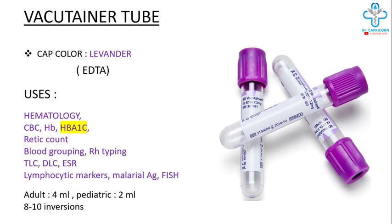The lavender color vacutainer tube contains EDTA. Red cell integrity is maintained here, therefore it is used for hematology purposes such as complete blood count, hemoglobin estimation, HbA1c estimation, reticulocyte count, blood grouping, RH typing. It is also used for total leukocyte count, differential leukocyte count, and ESR.